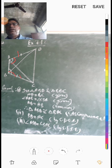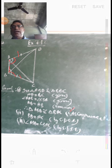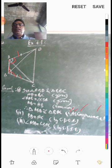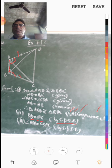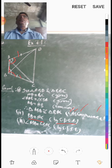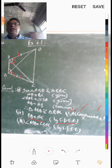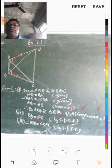Side equal, then angle equal, then side equal again — so this is the Side-Angle-Side (SAS) Congruence Rule. After proving congruence, we can prove BD equals AC using CPCT — meaning Corresponding Parts of Congruent Triangles are Equal.